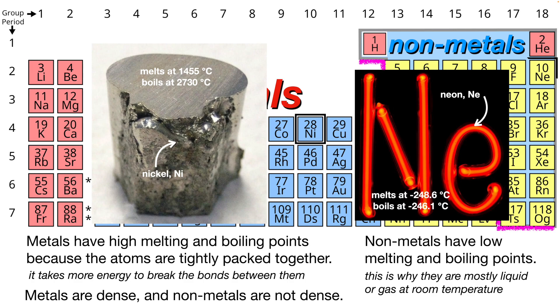Neon, on the other hand, is a gas at room temperature because it melts at negative 248.6 degrees Celsius, and it boils off to a gas at negative 246.1 degrees Celsius. So room temperature is well above that. It is already a gas.